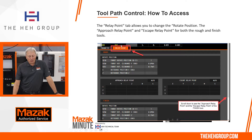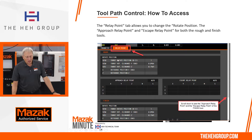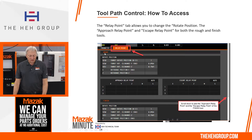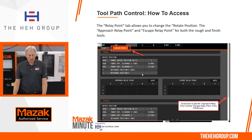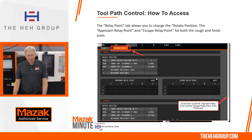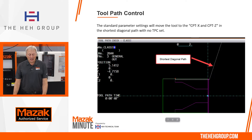If we hit the relay point tab at the top of the TPC, you're going to notice there are parameters dealing with the rotation of the turret index, and there are two sections. The top section is for the roughing tool and the bottom section is for the finish tool. Below the parameters you'll notice there's an approach relay point on the left middle section of the screen and over to the right you have the escape relay point. Moving your cursor to auto, a soft key below will allow you to select manual and enter in the toolpath.